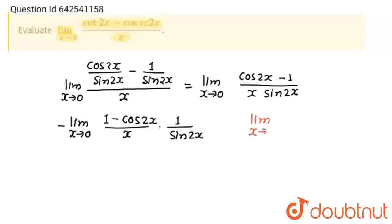Limit x tends to 0, 1 minus cos 2x upon x squared is equal to 1/2, and limit x tends to 0, sin 2x upon x is equal to 1.